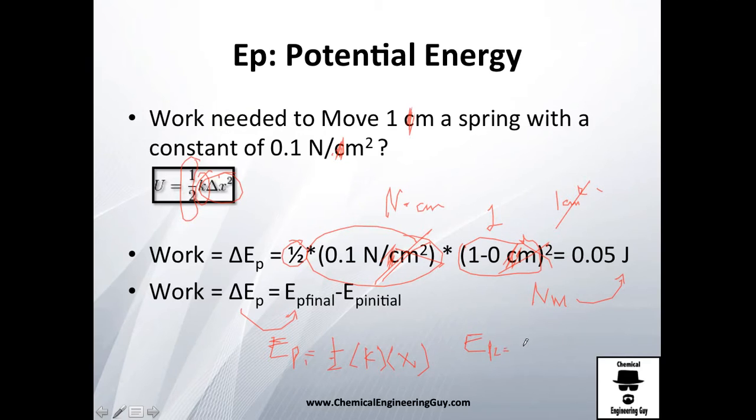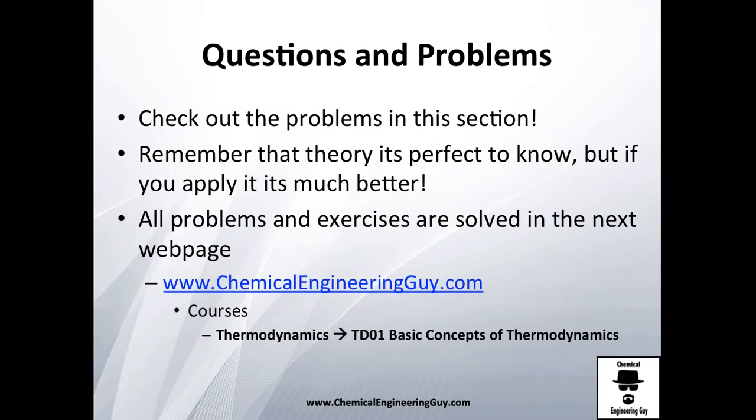Perfect, we got the change in potential energy. Or you could do, well I don't recommend it that much, but you could do this by separate: the potential energy at the beginning, which will be k times x1 at the beginning, and Ep2 will be potential energy at the end. Then we make the subtraction. Whatever the case, you should get the difference because that will be the work needed to do that movement.